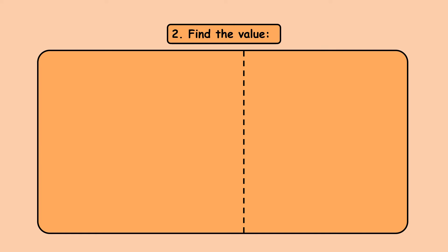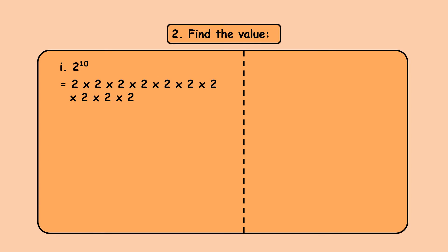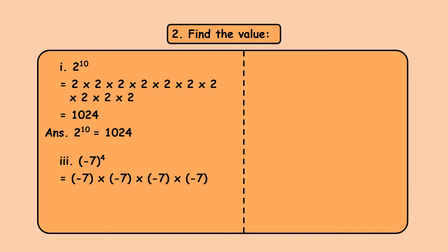Moving to question number 2 of the same practice set: find the value. Sum number 1 is 2 raised to 10. The index is 10, meaning I multiply my base 10 times — 2 into 2 ten times — and the answer is 1,024. So 2 raised to 10 is equal to 1,024. The third one is minus 7, the whole raised to 4: minus 7 into minus 7 into minus 7 into minus 7, giving 2,401. Since there are 4 negative numbers — an even count — the answer is positive.